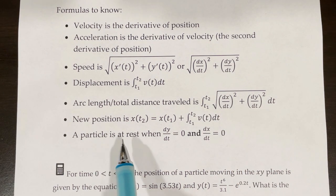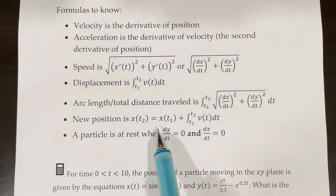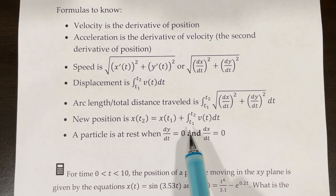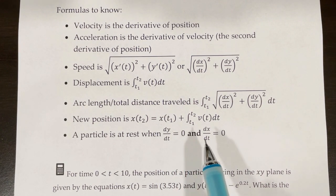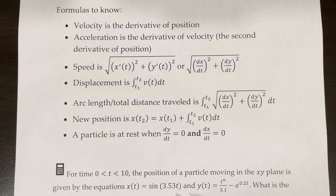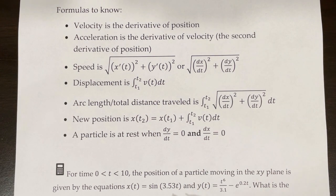If we're trying to find new position, we would take x of t2, the time at which we're trying to find that new position, and set that equal to x of time 1 plus the integral from time 1 to time 2 of v of t dt. We covered a few of those problems in lesson 9.5. Also, a particle is at rest when dy/dt equals 0 and dx/dt equals 0.